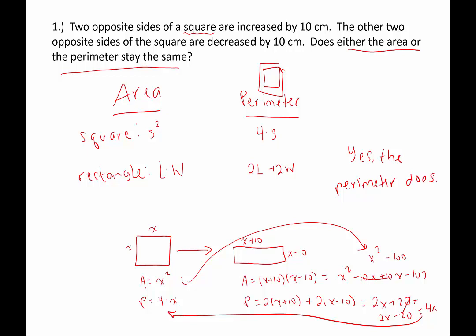We've now carried out steps 1, 2, and 3. Step 4 is to look back and make sure this makes sense. Does it make sense that the area changes while the perimeter stays the same? Yes — the area changes because we're changing the dimensions being multiplied, which changes the product. And for the perimeter, we're gaining 10 in one dimension and losing 10 in the other, so they cancel out when added together. So yes, this does make sense.